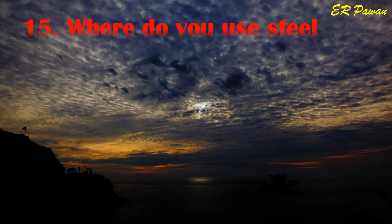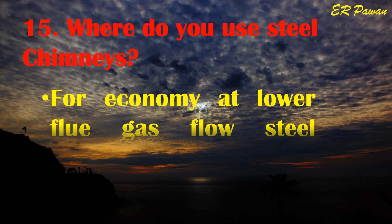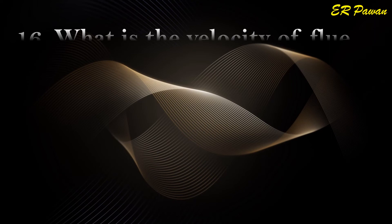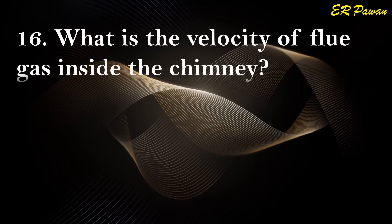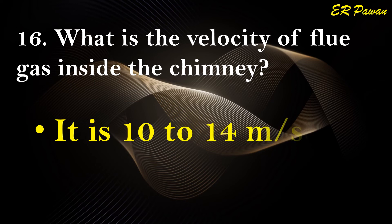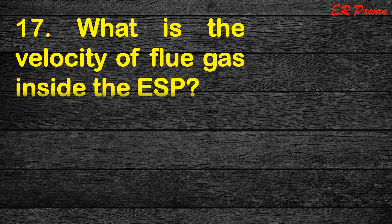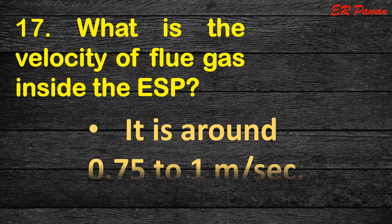Question 15: Where do you use steel chimneys? For economy at lower flue gas flow, steel chimneys are more preferred. Question 16: What is the velocity of flue gas inside the chimney? It is 10 to 14 meters per second. Question 17: What is the velocity of flue gas inside the electrostatic precipitators? It is around 0.75 to 1 meter per second.